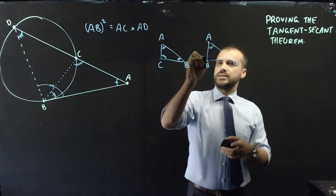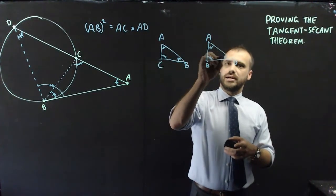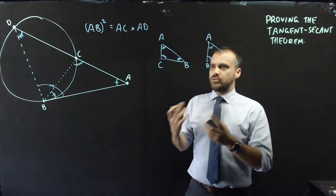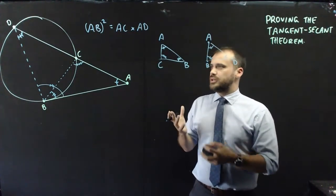And now these triangles we can see are similar. If they're similar, that means that we're going to get some ratios going on here.